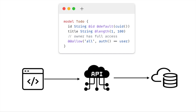ZenStack is an open-source full-stack development toolkit built above Prisma ORM. It uses the schema to generate access control-enabled APIs for both the back-end and front-end, allowing you to write significantly less code and move faster.